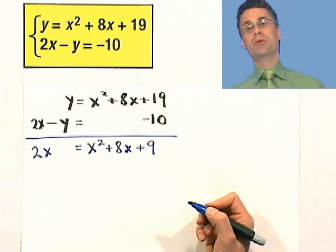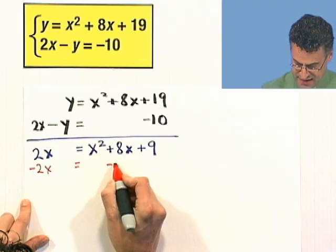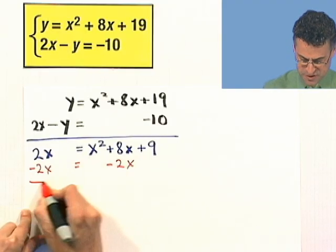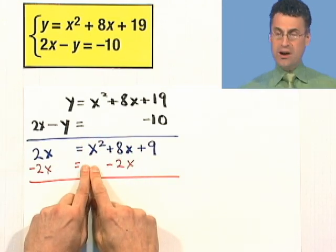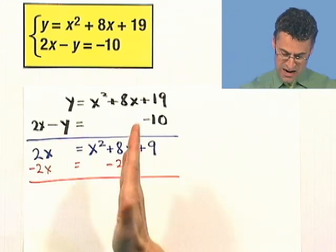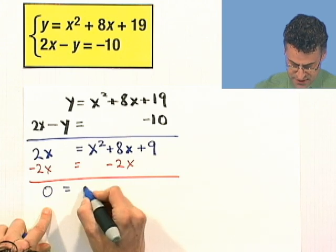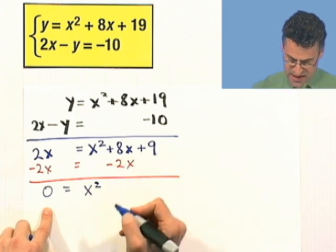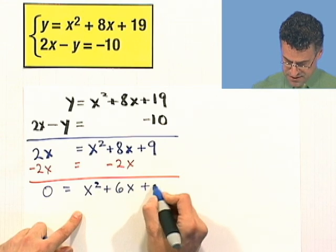It's a quadratic. Let's subtract the 2x on both sides. And again, notice how I write it. I immediately just do this. It's a great habit to get into. Just immediately write it where it belongs. I just like to line them up, and then there's no problem. 0 equals x squared, and then 8 minus 2 is 6, x plus 9.